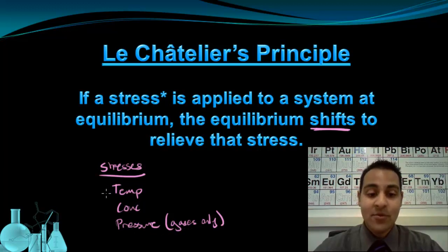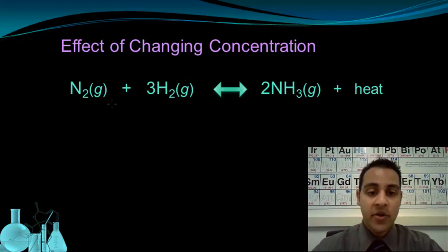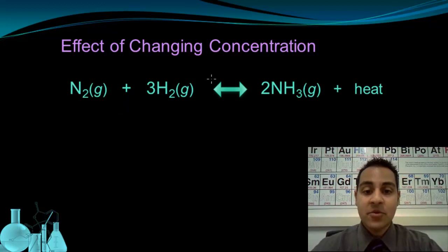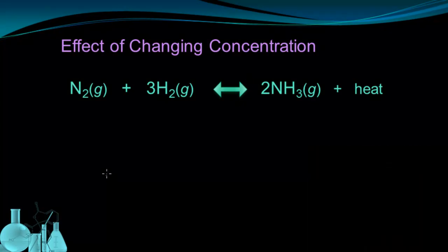We're going to see what happens to an equilibrium when these stresses are applied, and according to the principle it's going to shift. As we look at some examples we'll see what shifting really means. First, let's look at the effect of changing concentration. The reaction rate depends on molecules colliding, so if I increase the number of molecules in an area, I increase the rate of collision and the rate of reaction. Because equilibrium is based on forward and reverse reaction rates being equal, changing the amount of reactant or product affects those rates.